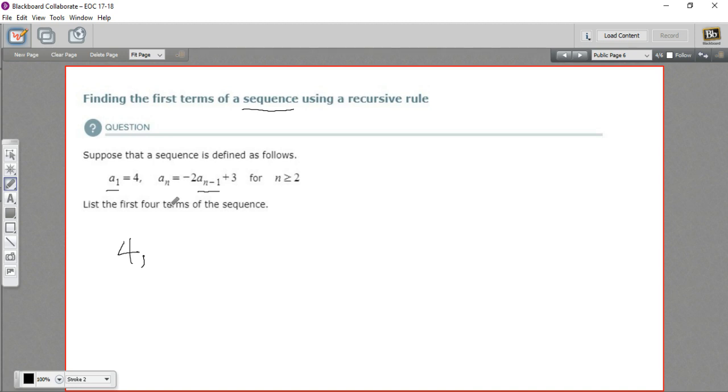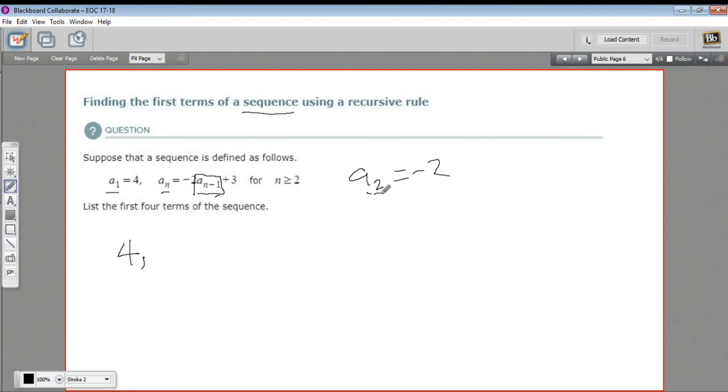It's usually best to start, if you know the first element, to start next by finding the second element. So we're going to find a sub 2. Well, how do we do that? First of all, it's a negative 2, and then it's times this a sub n minus 1. Well, what's a sub n minus 1? Well, we're finding a sub 2, so n is 2. So we put in a 2 here, 2 minus 1 is 1. Oh, so this is the previous element. It's a sub 1.